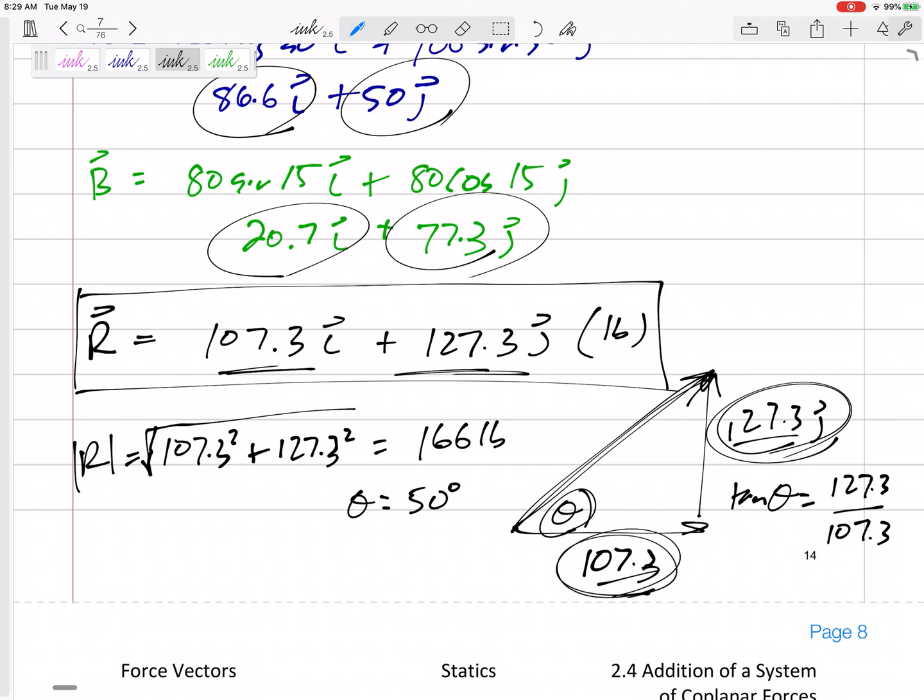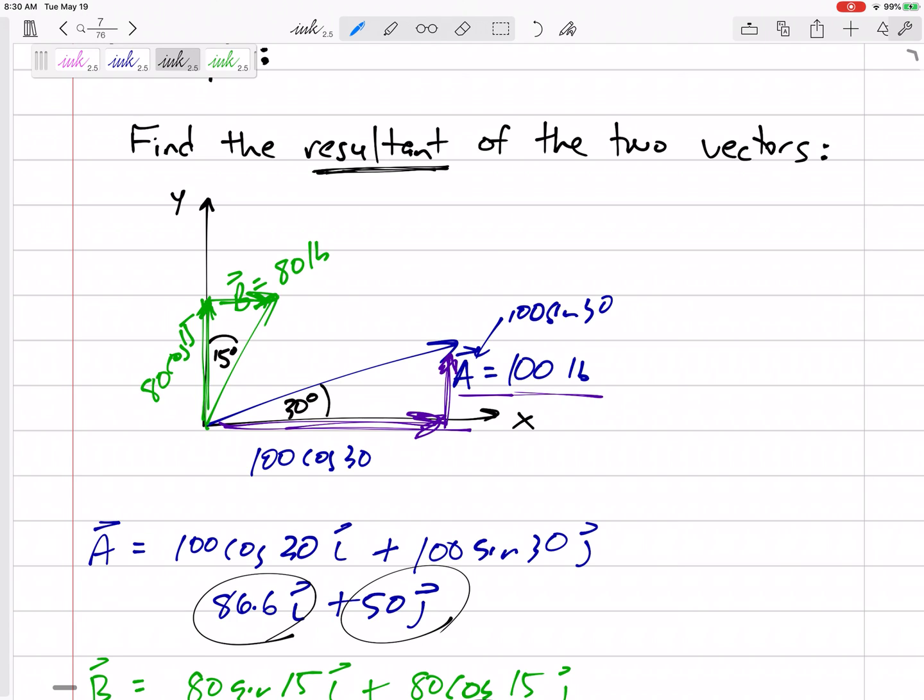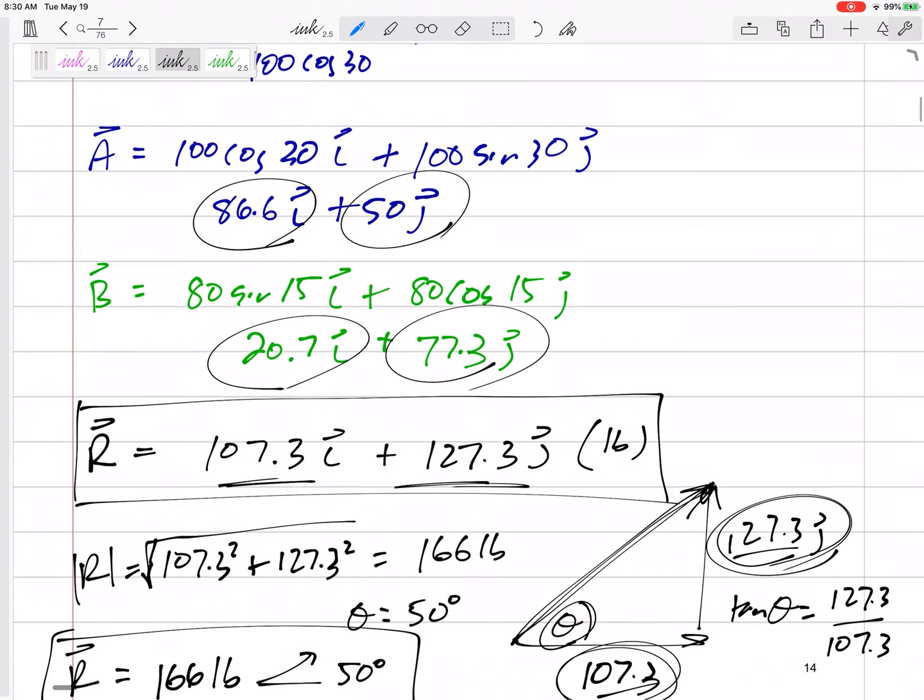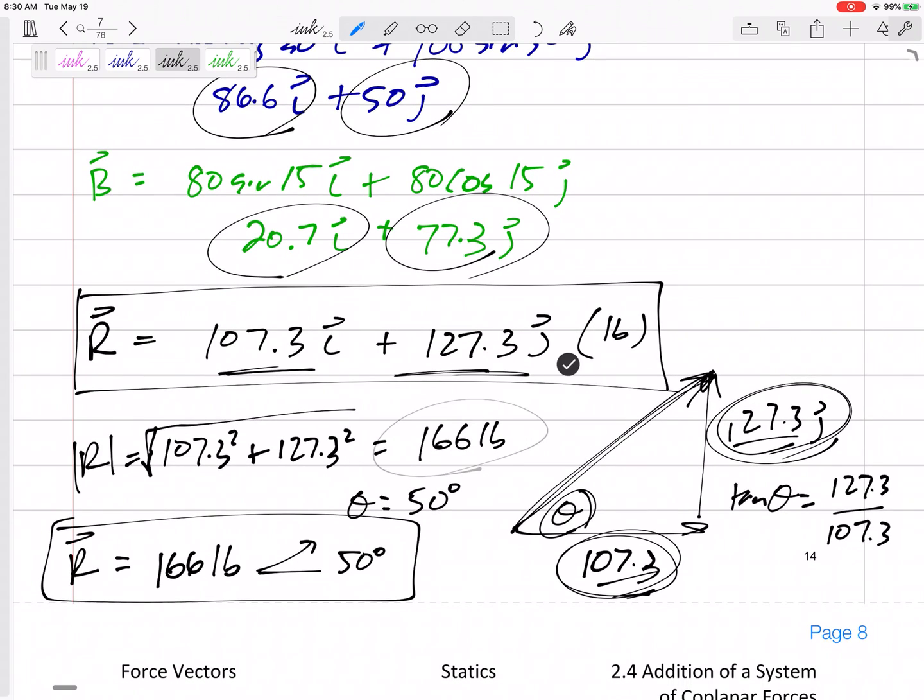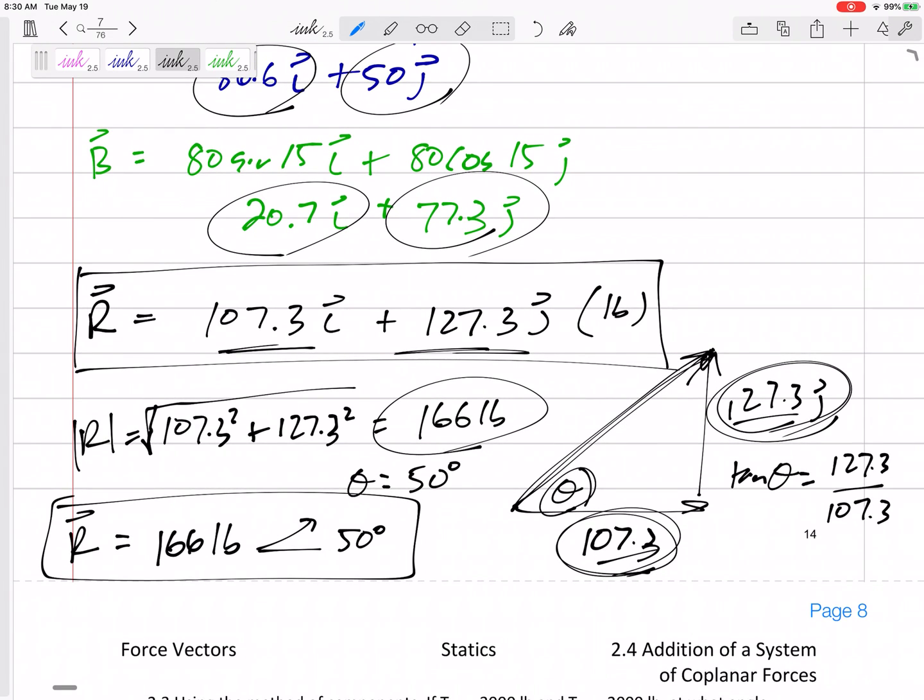So here's another way to write this: 166 pounds at 50 degrees. That arrow shows me that I'm defining 50 degrees from the horizontal axis in the positive direction. If you see vectors that need to be added together, break them into their components, add the components, and then if you need to, you can bring them back together to get one magnitude. But you see that 166 is not 100 plus 80. Those directions matter.